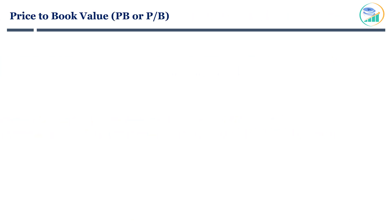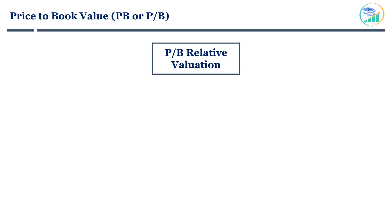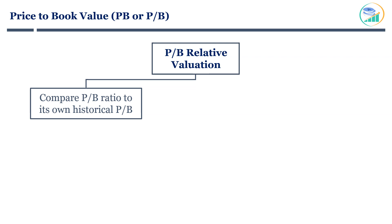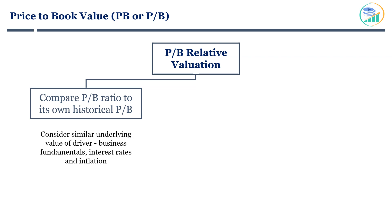As you understand the PB ratio, it's time to get into details of a few thumb rules to look at PB as a relative valuation metric. You can value a business by comparing its PB ratio to its own historical PB multiples. For historical multiples to be relevant, you should consider similar underlying drivers of value like business fundamentals, interest rates, and inflation. Considering business fundamentals are intact, a stock can be considered cheap when it's trading below historical PB multiples.